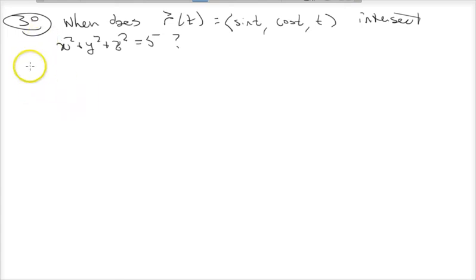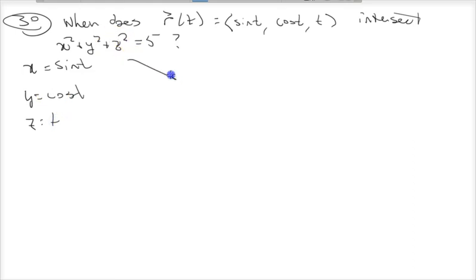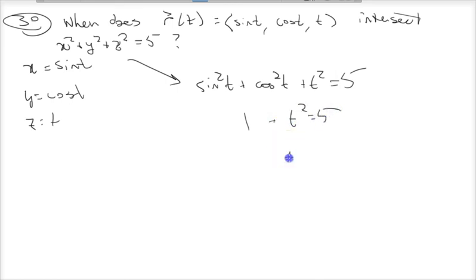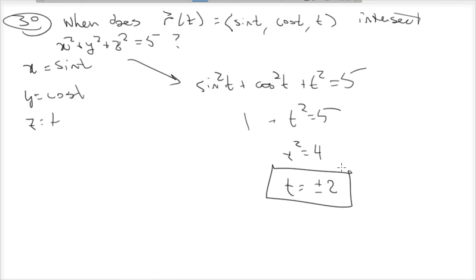Not terribly complicated — very similar to the previous problem. We have x equals sine t, y equals cosine t, and z equals t. Plugging in, we get sine squared t plus cosine squared t plus t squared equals 5. Sine squared plus cosine squared is 1, so 1 plus t squared equals 5. Subtracting 1, we get t squared equals 4, so t equals plus or minus 2. Those are the two values of t when the curve r intersects the surface. That's it for our intro to vector-valued functions — stay tuned for the next video when we start applying calculus to parametric functions like this.